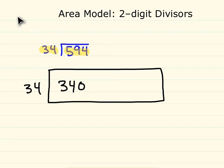because 34 times 10 equals 340. And knowing that we used a big chunk is very helpful.